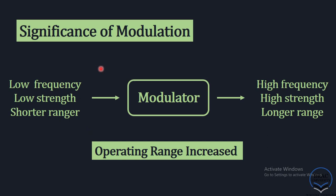Another significance of modulation is increasing the operating range. In a baseband transmission system, the signal has a low frequency, which implies low power, because the power of a signal is proportional to the square of the frequency. Low frequency means low strength, and generally a low-strength signal will have a shorter operating range. But when you modulate the signal with a high-frequency carrier, you increase the operating frequency, resulting in higher strength and thus a longer operating range.